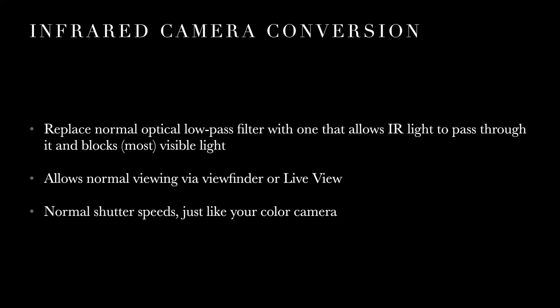With a full conversion, what you get back is a camera that only sees in infrared. If it's a DSLR, you just look through the viewfinder as normal — all the work was done at the sensor level. With live view or a mirrorless camera, you'll see the scene in infrared in real time, which is really cool. For the most part, you'll get relatively normal shutter speeds — just like your visible light or color camera. At higher wavelengths there's a little less light, so you might have slightly slower speeds, but you can shoot handheld normally.